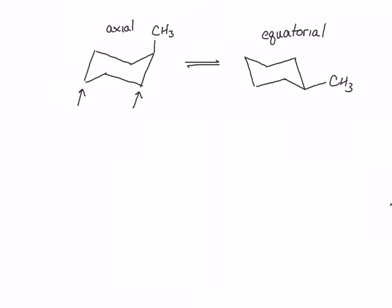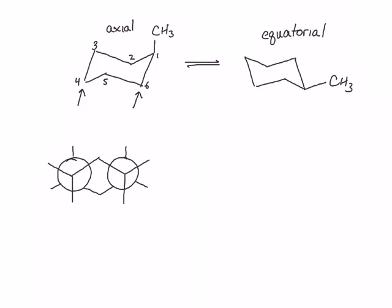Let's draw this Newman projection. I've drawn the back carbons, which are carbons 1 and 3. Carbons 1 and 3 are going to have a bond to carbon 2, and that bond is pointing down. My front carbons — carbons 6 and 4 — are going to have a bond to carbon 5, which is pointing up. Now I need to draw in the rest of my substituents, which are mostly hydrogens except for on carbon 1. These are all going to be spaced around the central carbon at about 120 degrees, evenly spaced because they're all staggered and because these bonds are 109.5 degrees.